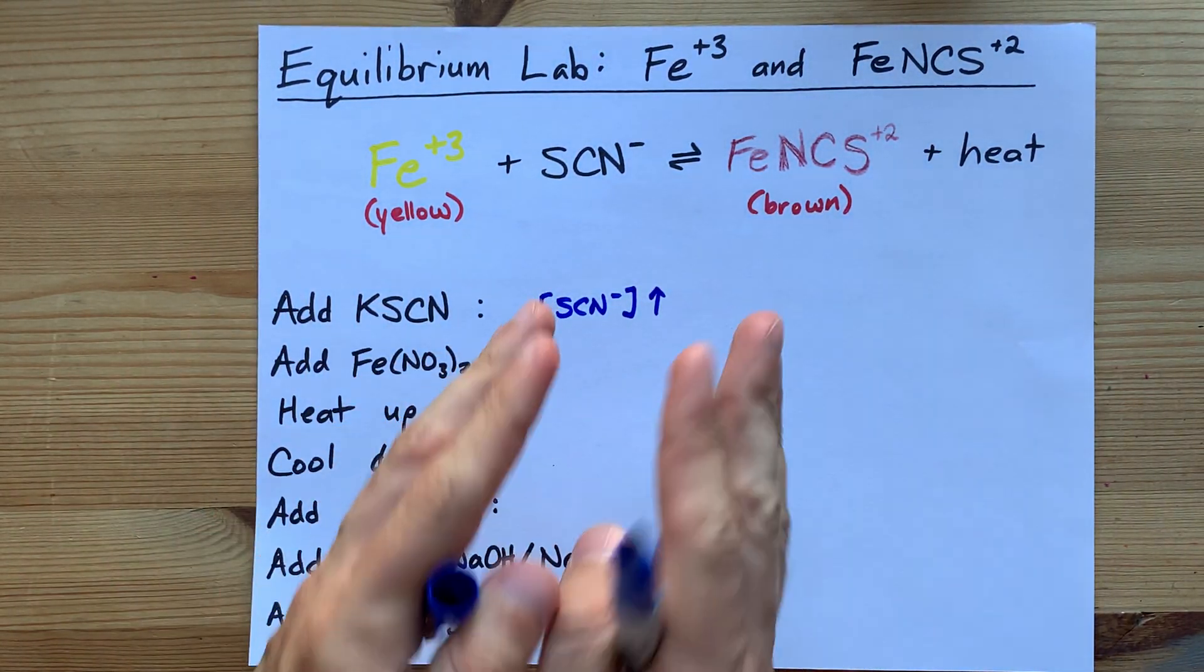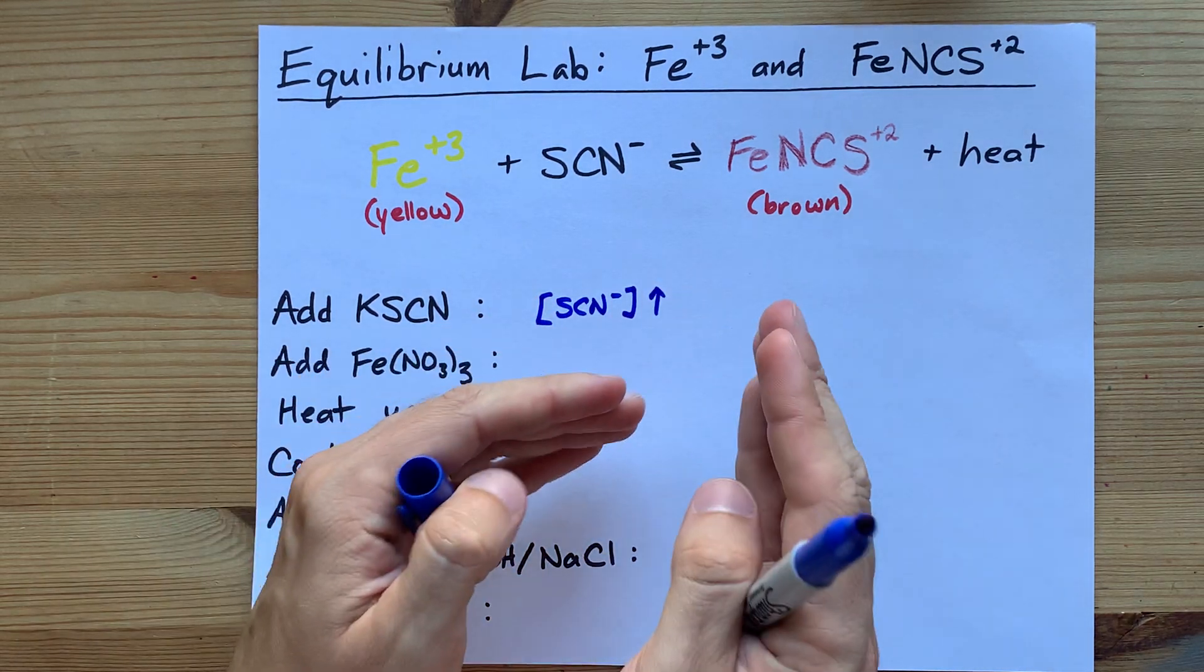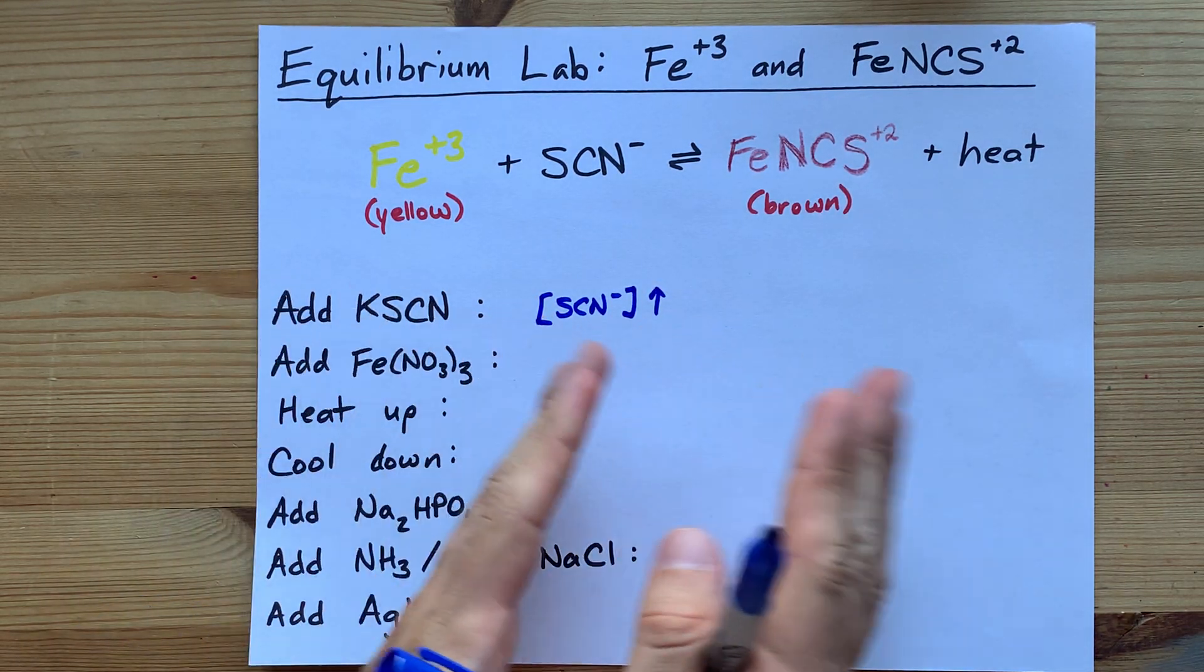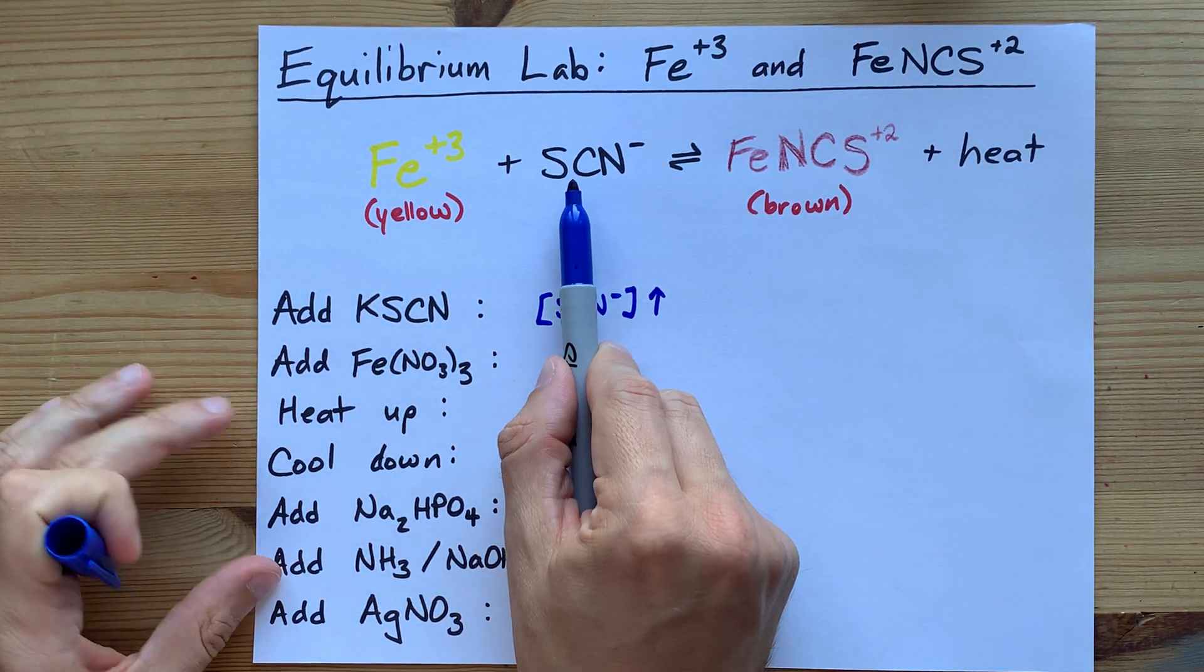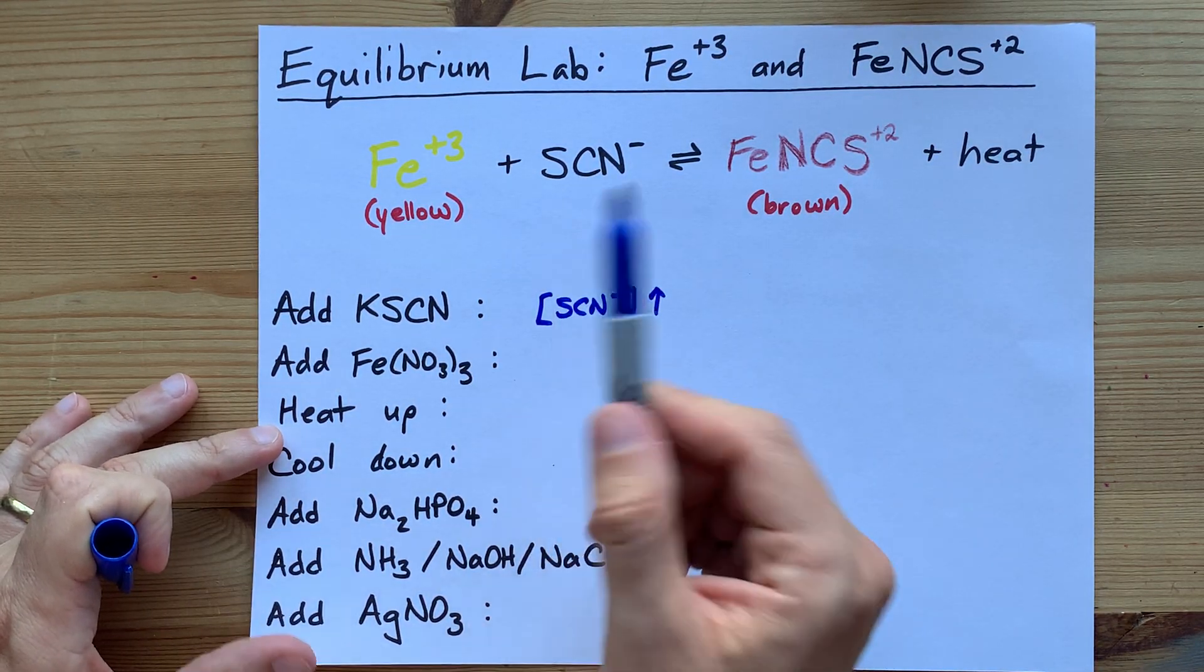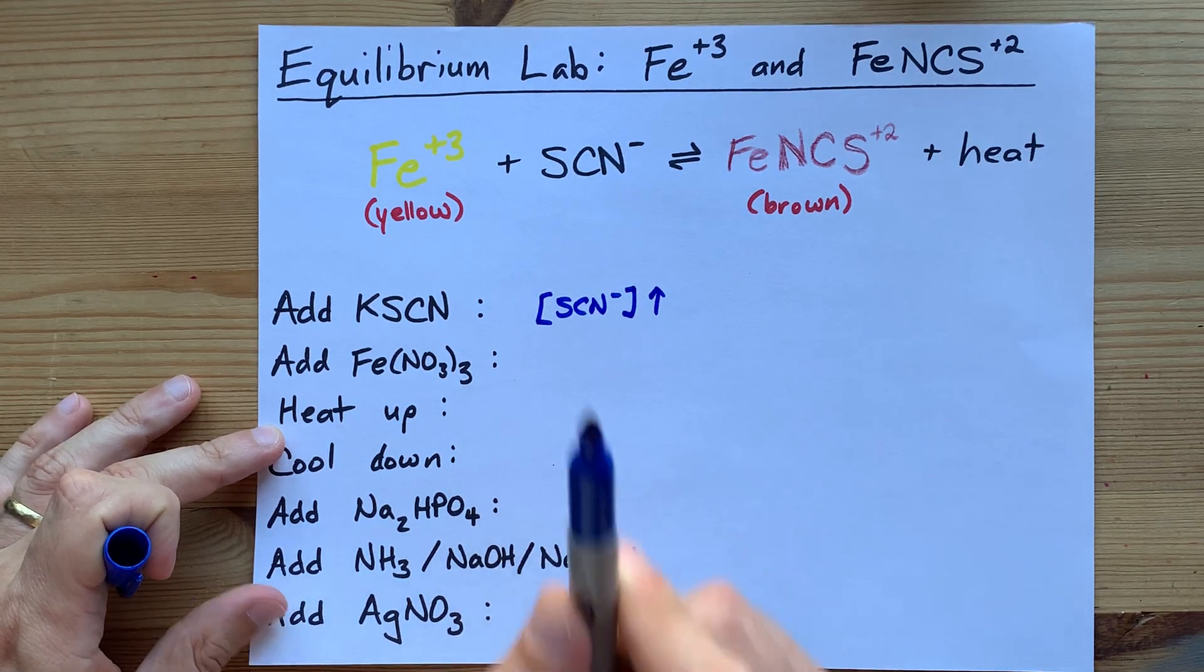The point of the lab is Le Chatelier's principle, where every disturbance is partially counteracted by the action of equilibrium. So if you added thiocyanate, it's going to react so that some of it gets used up.